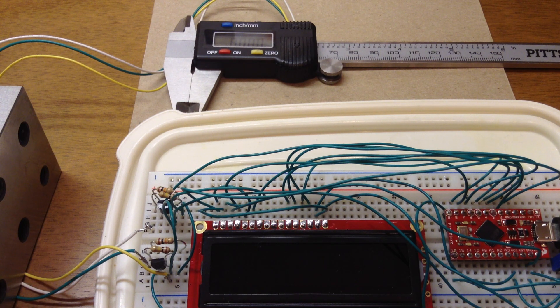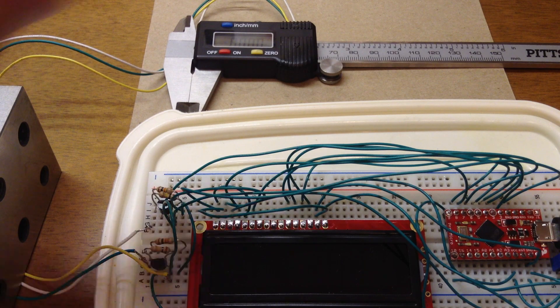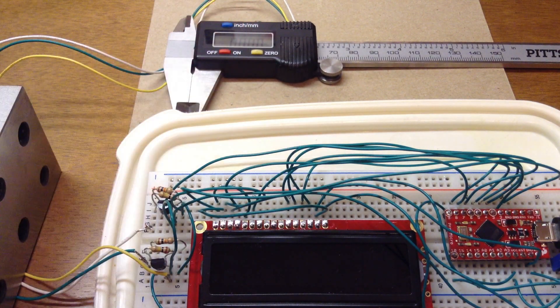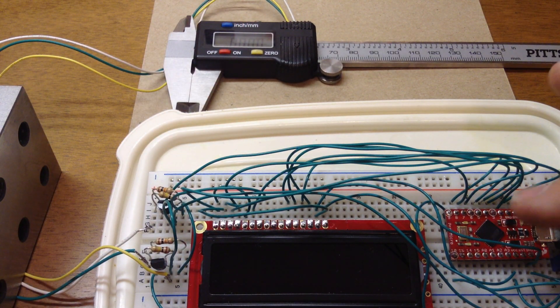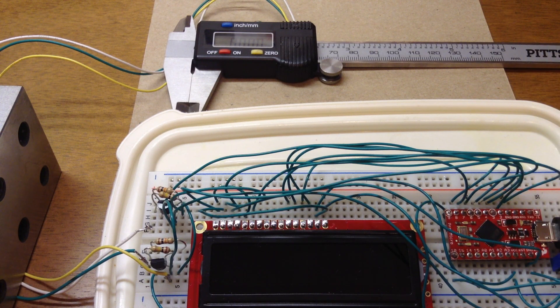This is a demonstration of a prototype measurement system consisting of a $10 Harbor Freight digital caliper, a $20 processor called an Arduino, and a $16 display.